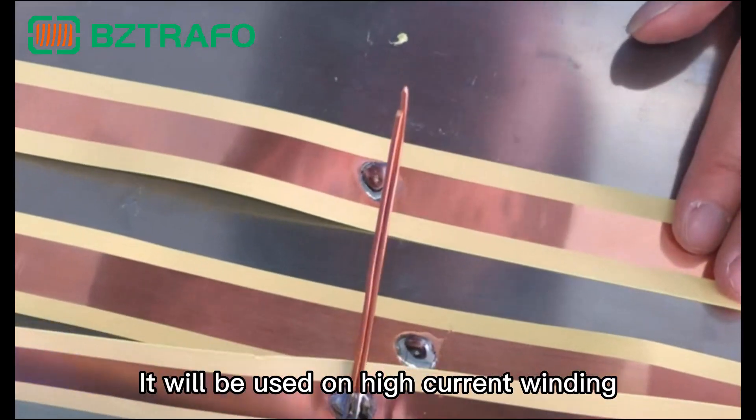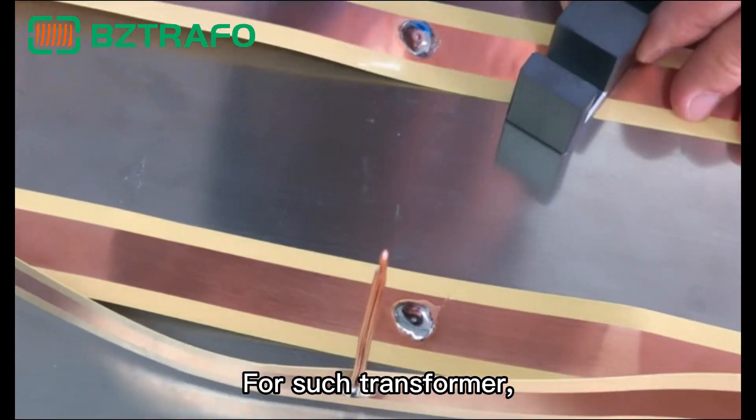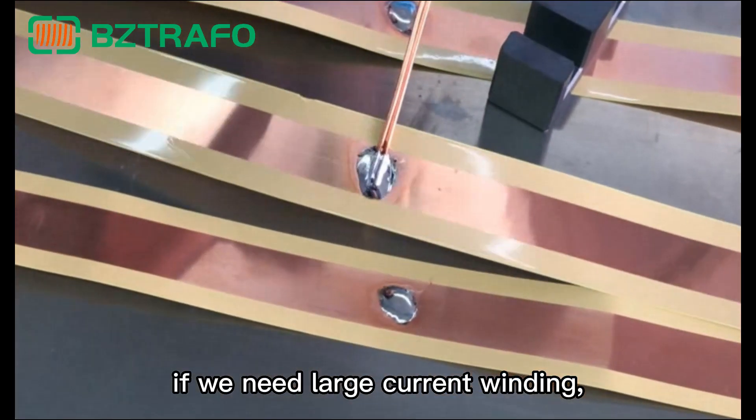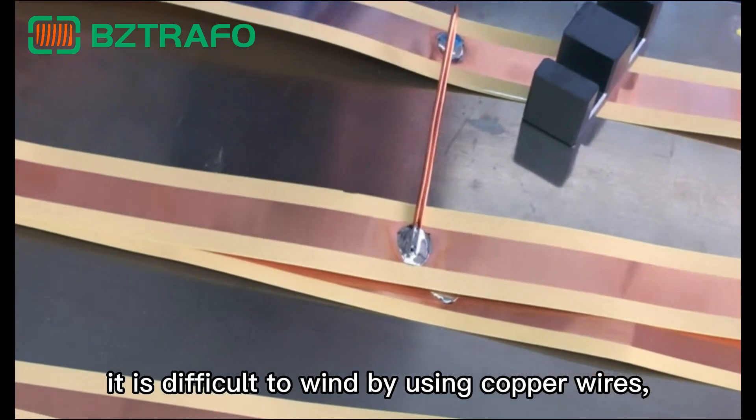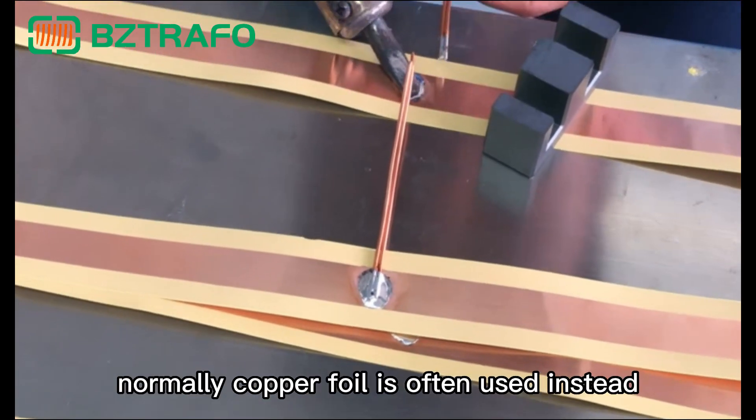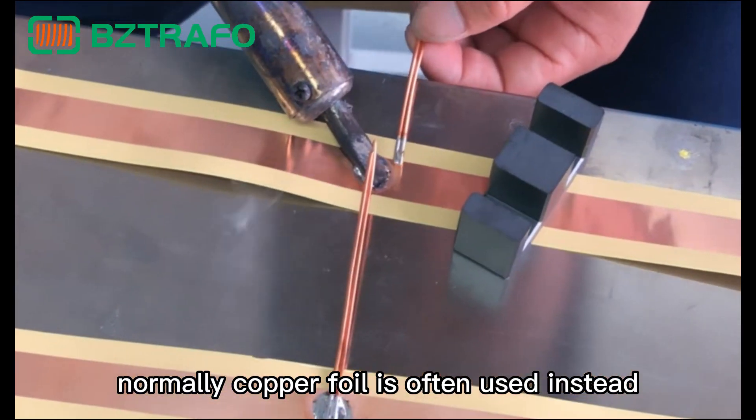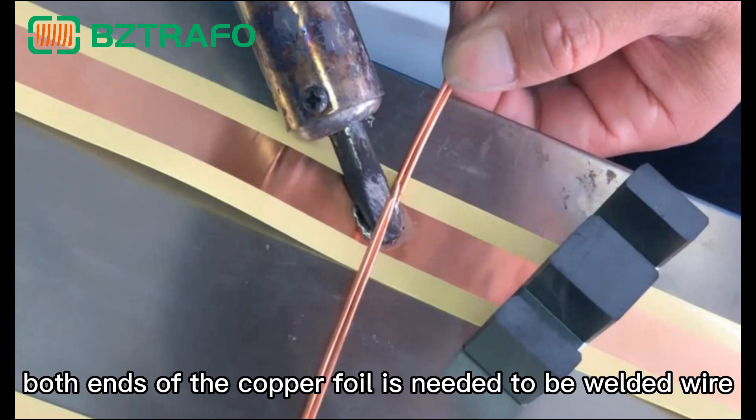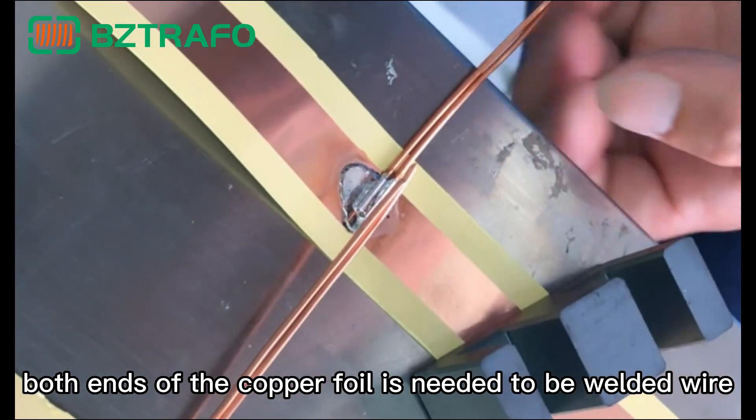Third, it will be used on high-current winding. For such transformers, if we need large current winding, it is difficult to wind by using copper wires because the copper wires are large and the skin effect will occur. Normally, copper foil is often used instead. At this time, both ends of the copper foil need to be welded with wire.